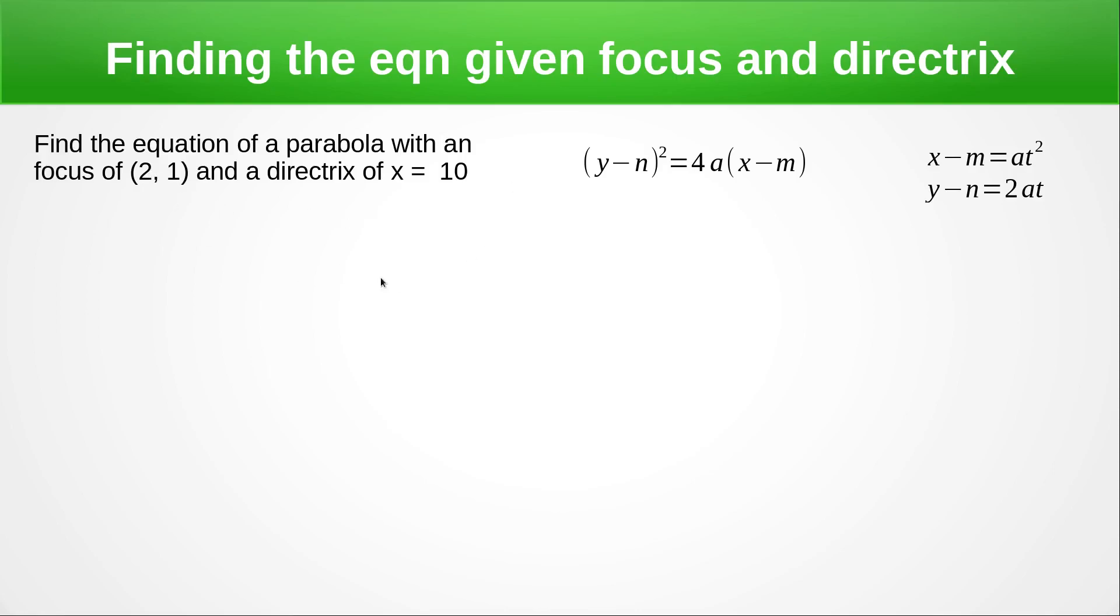Well, the distance between these two is negative 8, because the focus is actually on the left of the directrix. So the a value is always going to be half that, because obviously this distance is 2a like we saw in our first slide. So a is negative 4.